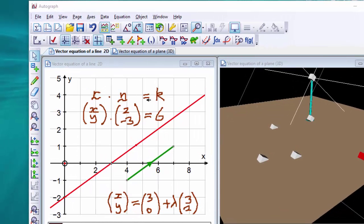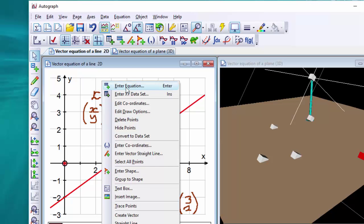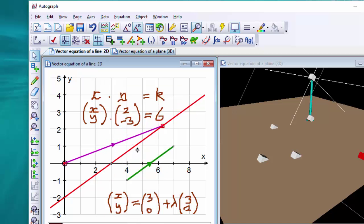R dot n is a constant. R is the vector from the origin to a general point on the line, so that's from here to here. Right click, create a vector. OK, that's a general point on the line.